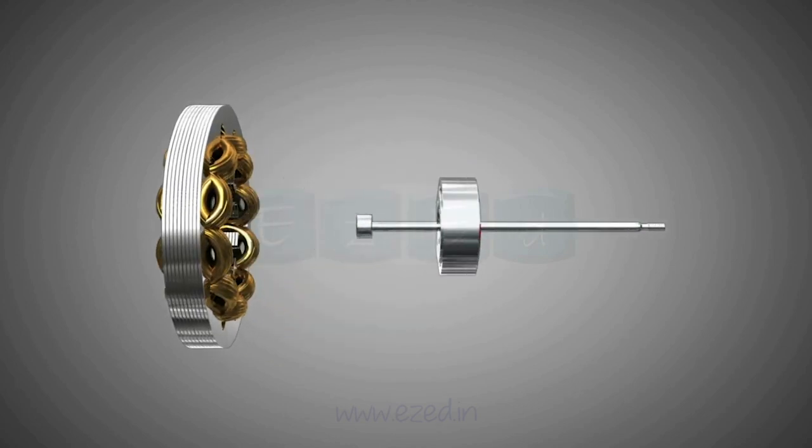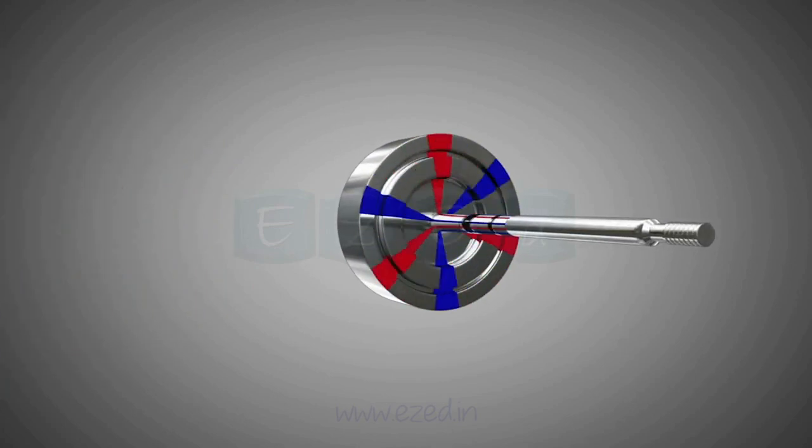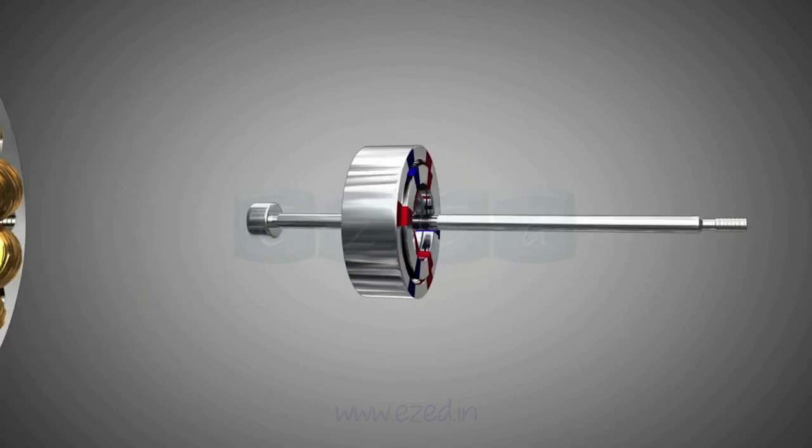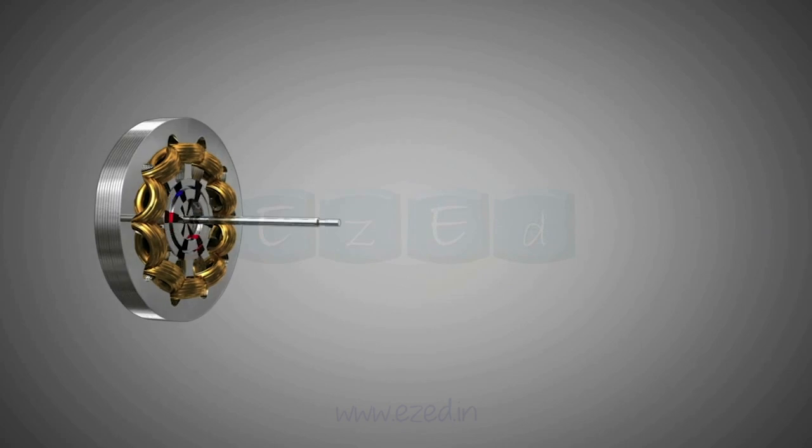Now let's study the rotor. A rotor is a part of a motor which acts as an inner cylindrical core and rotates continuously once the motor is started. It is always kept inside the stator.